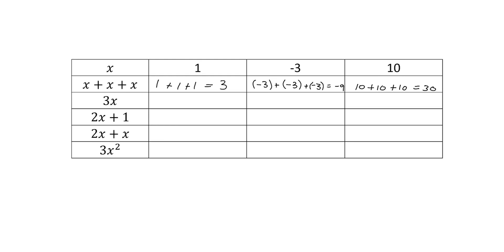Let's have a look at a different expression: 3x. What does that mean? It means 3 times x. So when x is equal to 1, we say 3 times 1 and we get 3. When x is equal to minus 3, we take that minus 3 and multiply it by 3 and we get minus 9. And here we take the 10 and multiply it by 3 and we get 30.